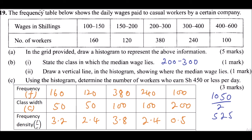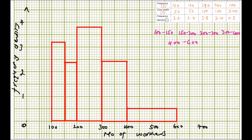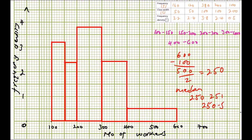Part b, roman numeral two asks us to draw a vertical line on the histogram showing where the median wage lies. To locate the median value on the horizontal axis, we consider the midpoint approach: 600 minus 100 equals 500, divided by 2 gives 250, so the median lies at approximately 250 shillings. We draw a vertical blue line at 250 on the histogram to indicate the median.